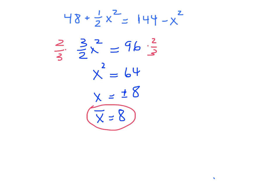And then we need to compute p-bar. So just plug 8 into one of these formulas. I'm going to use the 144 minus x squared. That'd be 144 minus 64, which turns out to be 80. So we'll set our p-bar at 80.